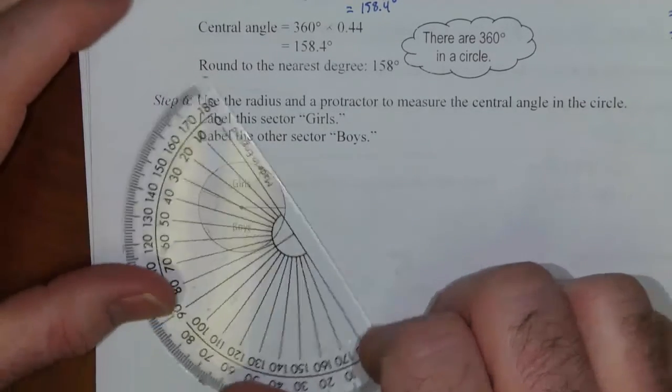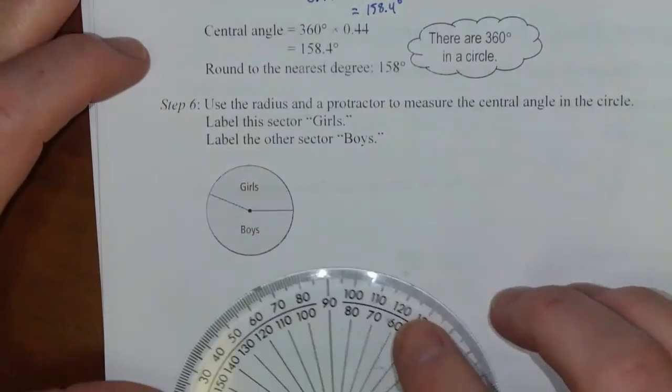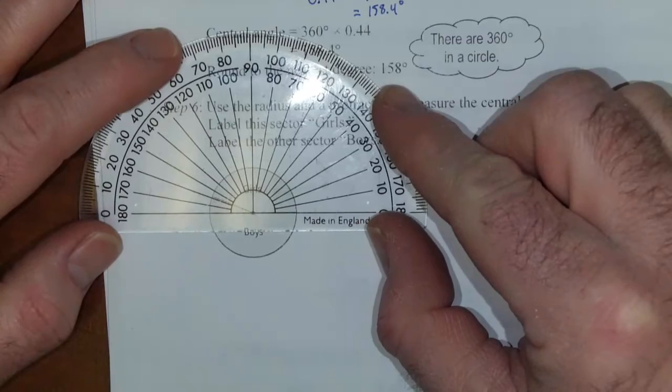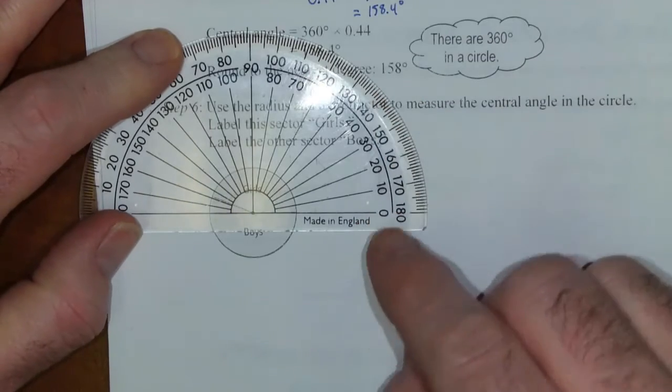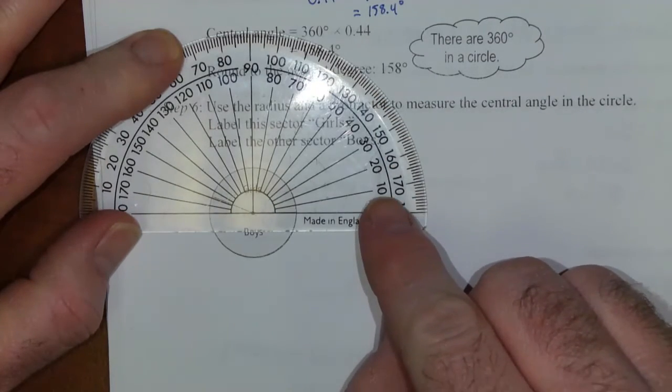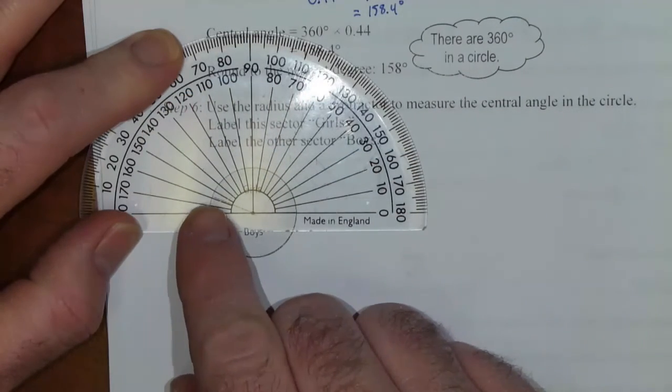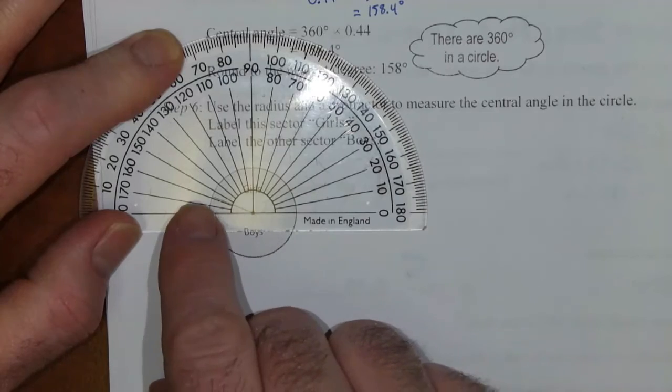So the trick to that is find the smaller piece first. So let's look at the girls. The girls was 158 degrees. So we're going to set this up on my circle: zero. And now I need to find 158 degrees, right about there. Yep, that's where this line is showing on the handout that's already provided.